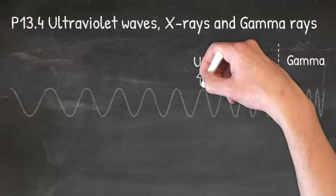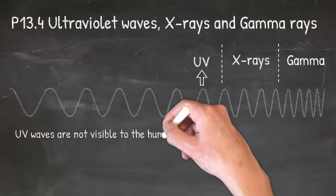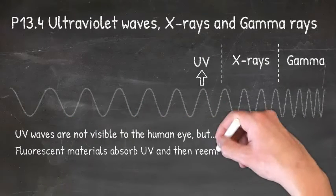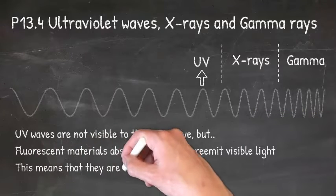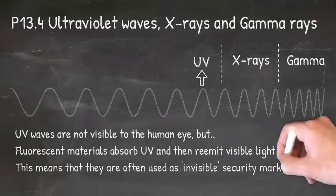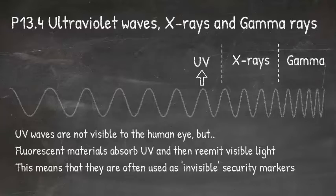Let's start by looking at UV. UV waves are not visible to the human eye, but fluorescent materials absorb UV and then re-emit visible light. This means they are often used as invisible security markers.